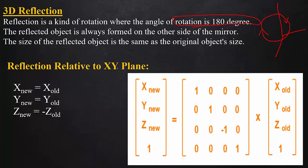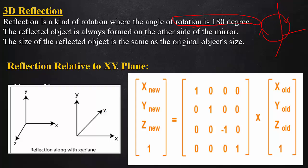If you want to rotate in the x-y plane, this is a reflection. Now we have a 3D object in space, and we perform a reflection with respect to any particular plane.